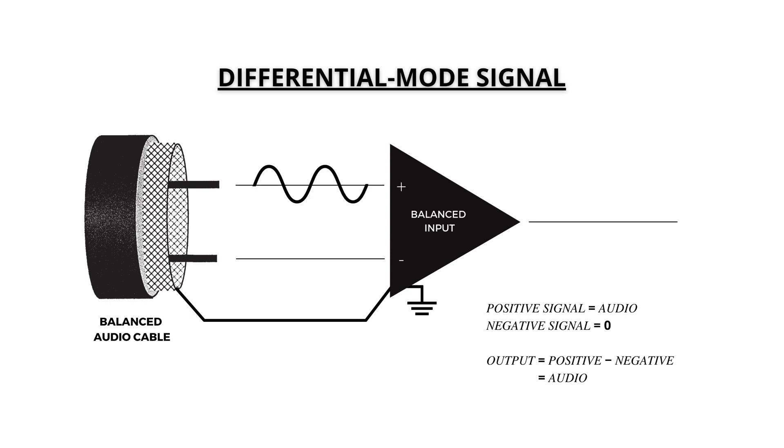So if there's a signal in the positive conductor and nothing on the negative conductor, the signal goes through. This is known as a differential mode signal. If there is an identical signal in both conductors, they will cancel out at the differential amplifier and not go through. This is known as a common mode signal.